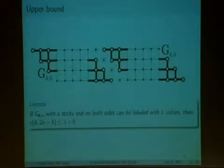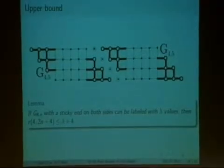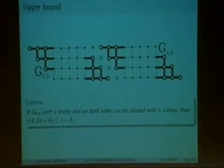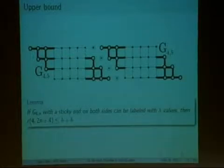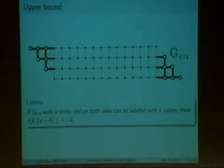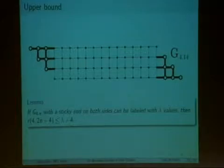To find our upper bound, we define a sticky end to be this bolded configuration resembling somewhat of a staircase. It turns out that if we combine two copies of a 4 by n grid, each with two sticky ends, and then we merge them in the middle with two high vertices, obviously the path condition will still be satisfied. Furthermore, this actually yields a 4 by 2n plus 4 grid graph with two sticky ends. So this kind of iterative construction actually gives us an upper bound.